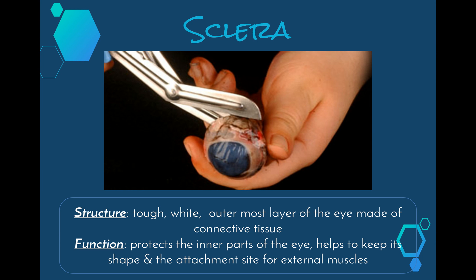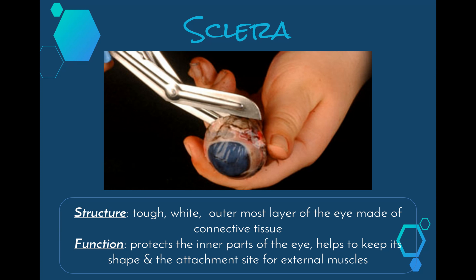The function of the sclera is to protect the inner parts of the eye, help the eyeball keep its shape, and it's also the attachment site for the external muscles that help us move our eye around.